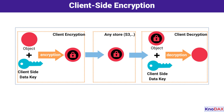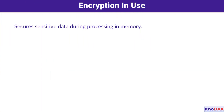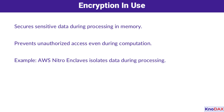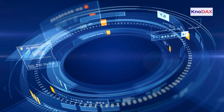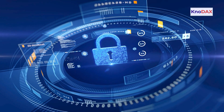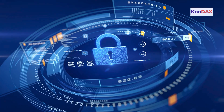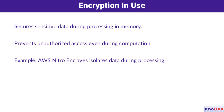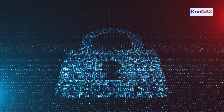Encrypting data while it's in use might sound tricky, but AWS makes it possible with solutions like Nitro Enclaves. This technology isolates sensitive data during processing, ensuring it remains secure even while computations are running. It's perfect for applications like confidential analytics or secure transaction processing.